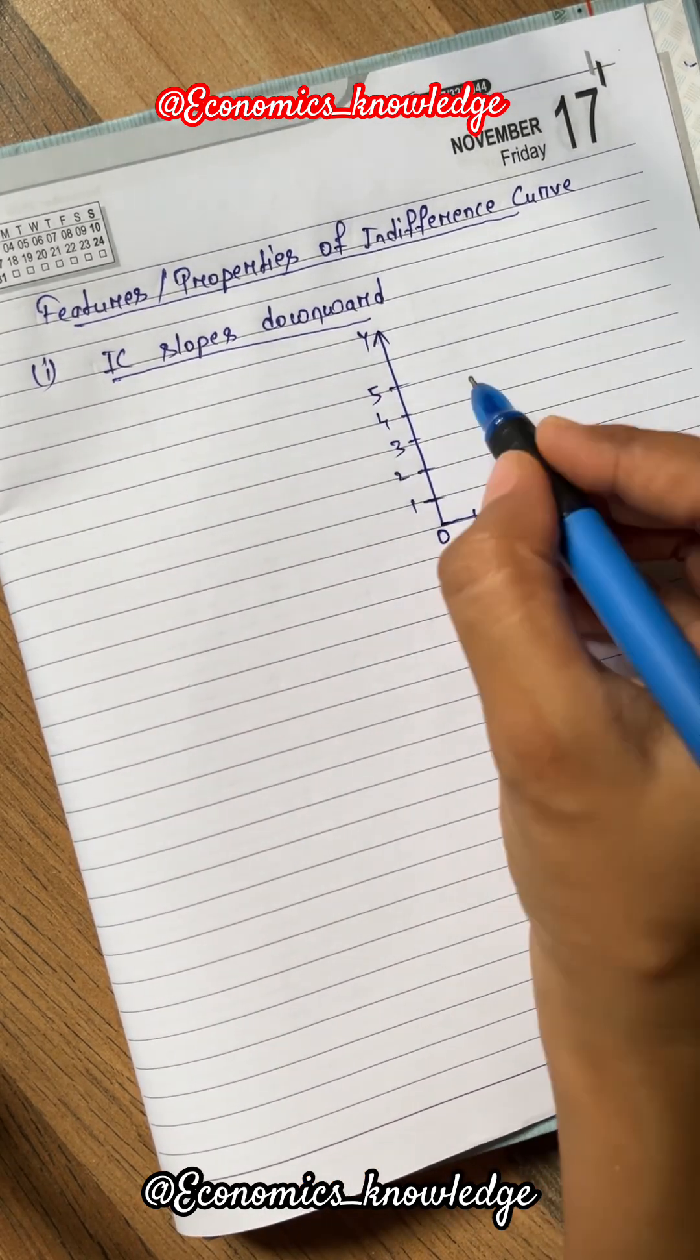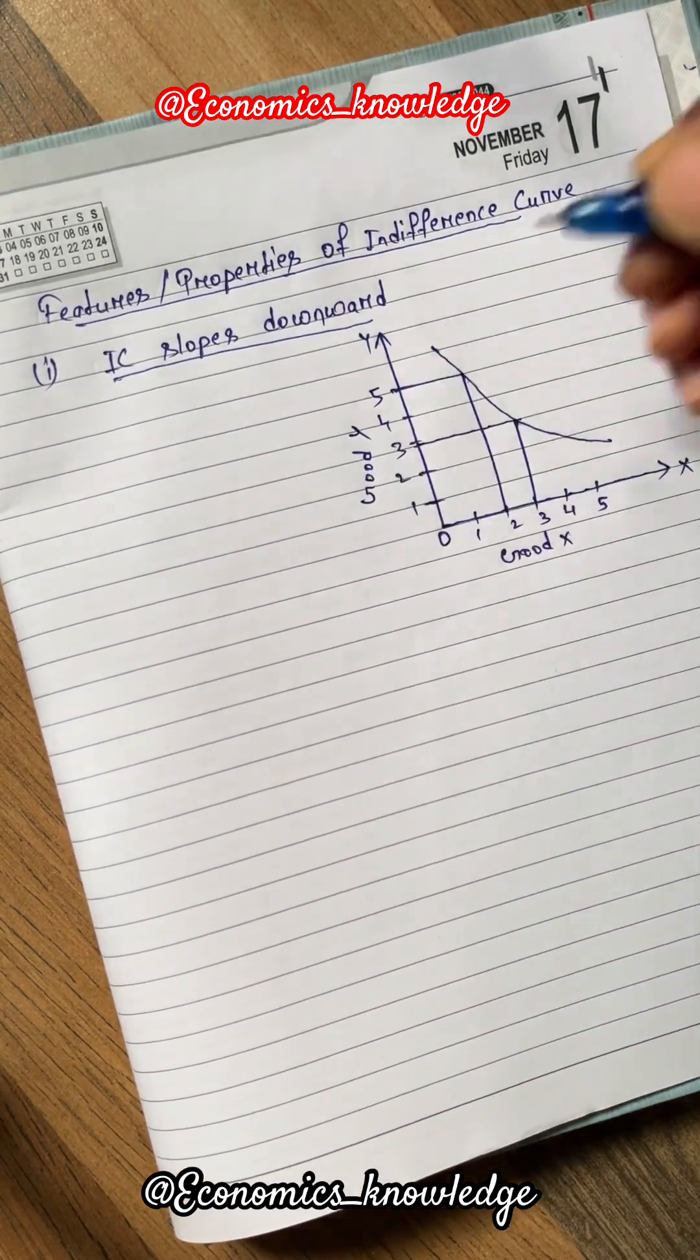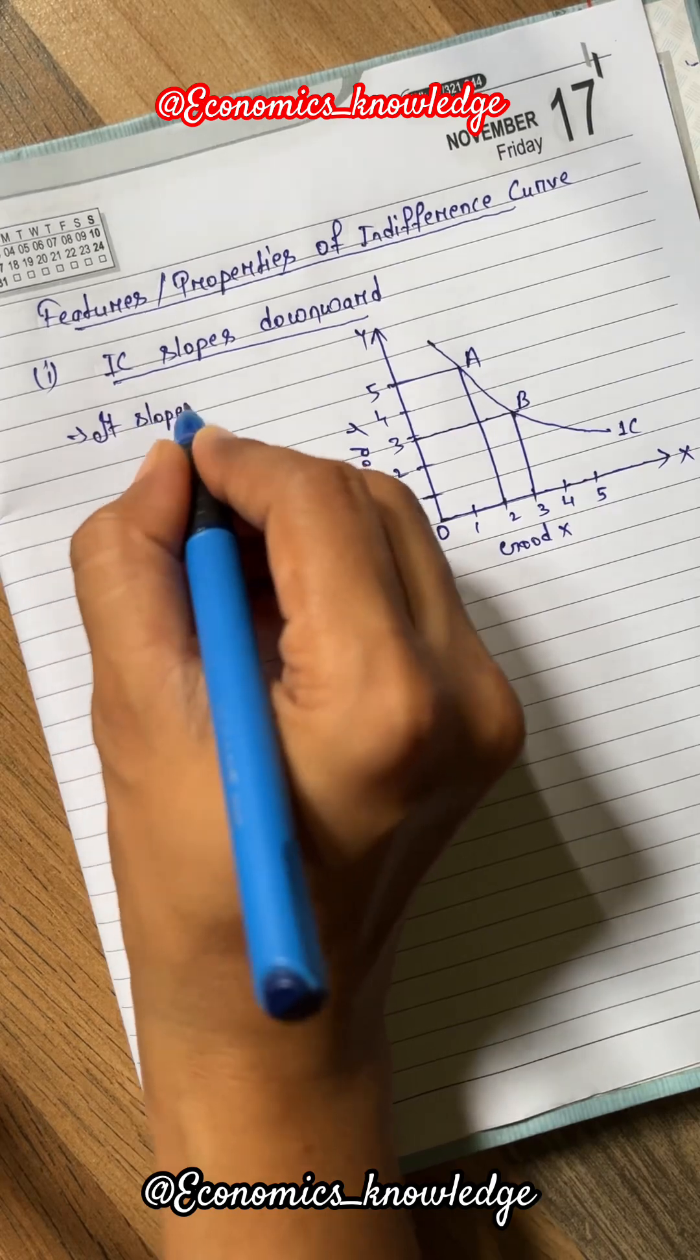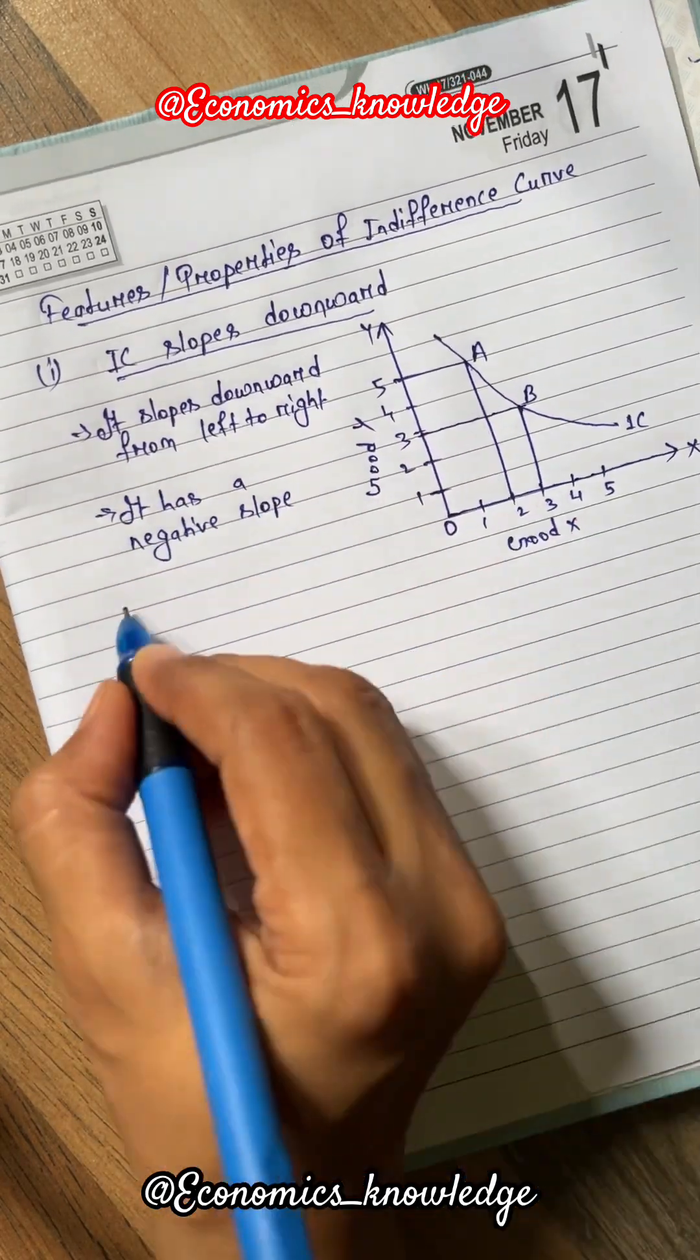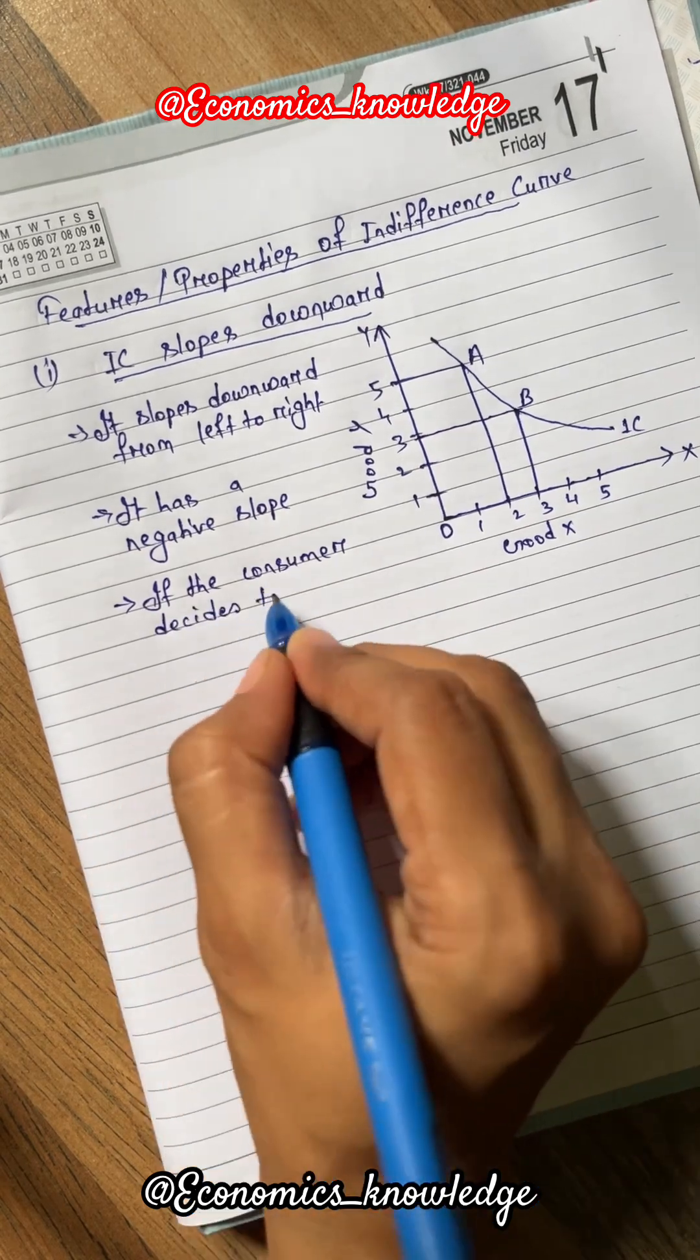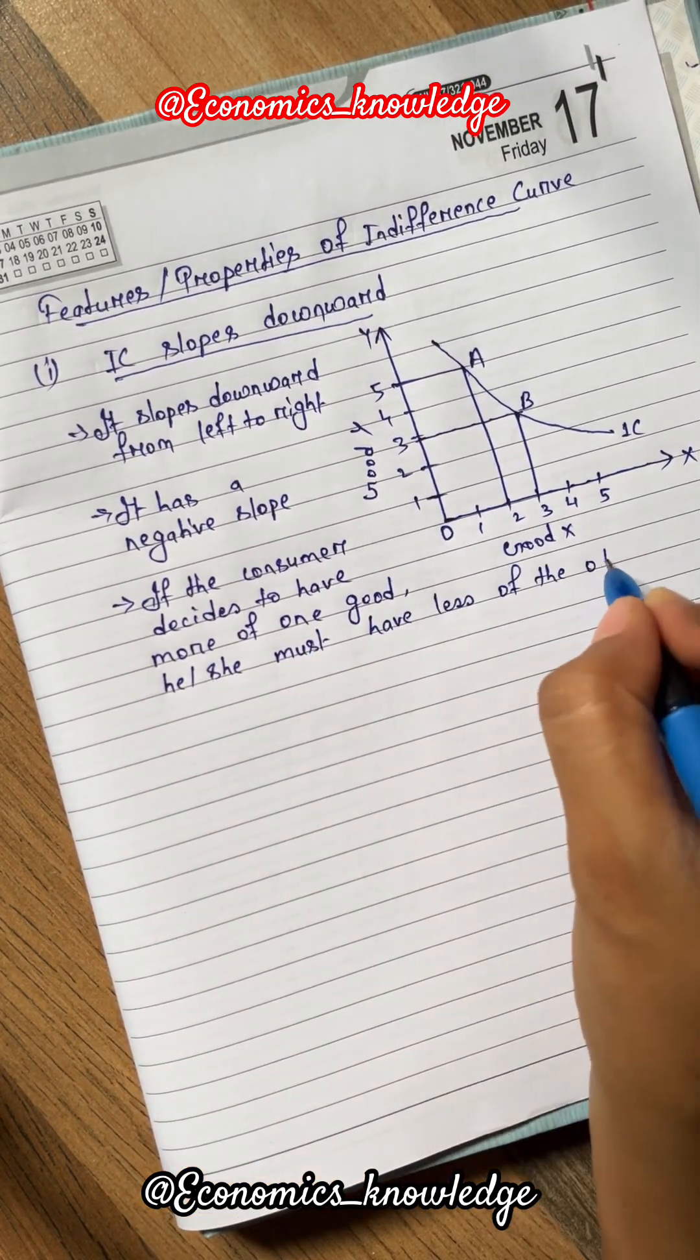In the diagram, good x is shown on the x-axis and good y is shown on the y-axis, and here we have two combinations, a and b. By joining combination a and b we get the indifference curve. From the diagram we can say that IC slopes downward from left to right with a negative slope. If the consumer decides to have more of one good, he or she must have less of the other.